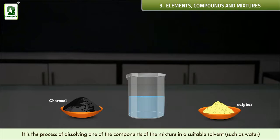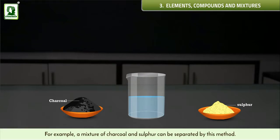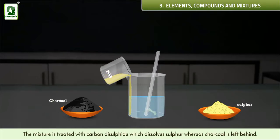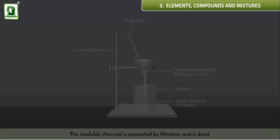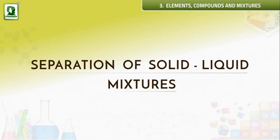Solvent extraction: this is the process of dissolving one of the components of the mixture in a suitable solvent such as water, whereas the other component is not soluble in that solvent. For example, a mixture of charcoal and sulfur can be separated by this method. The mixture is treated with carbon disulphide, which dissolves sulfur whereas charcoal is left behind. The insoluble charcoal is separated by filtration and dried, and pure sulfur can be obtained by evaporating the carbon disulphide.